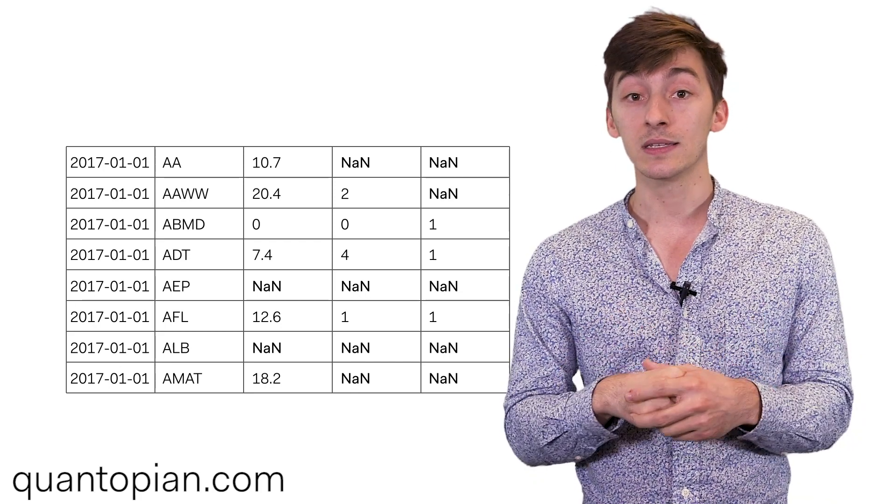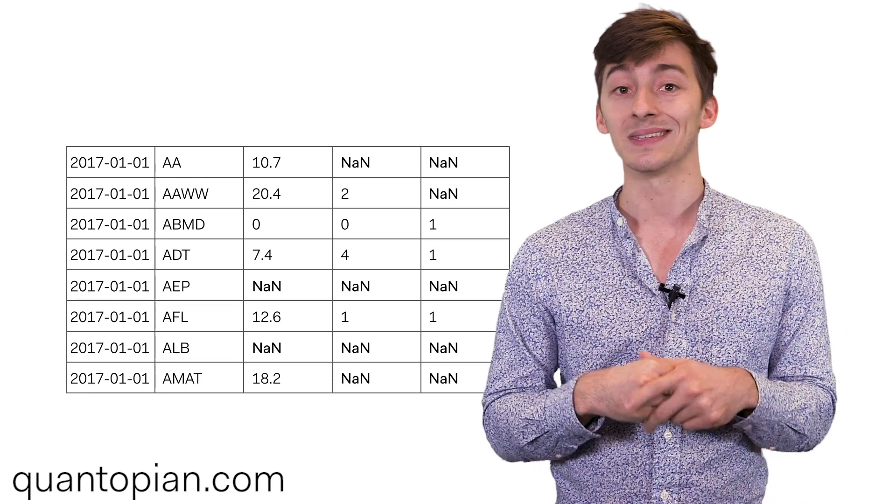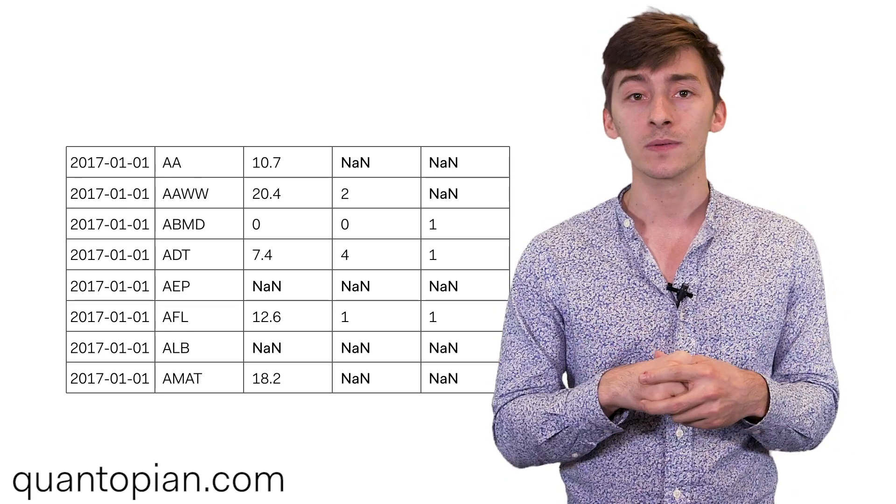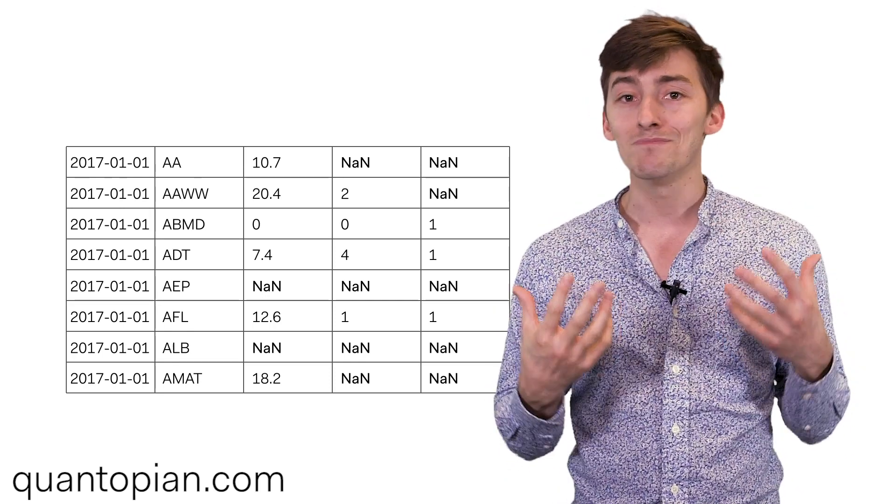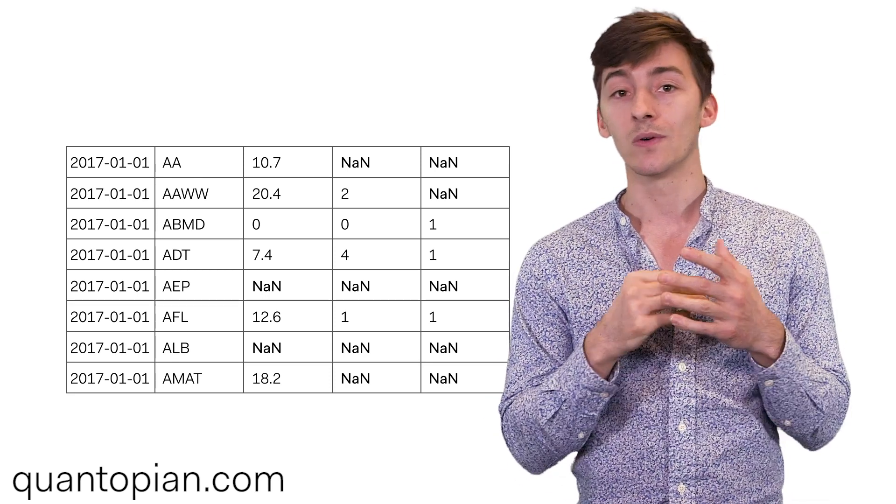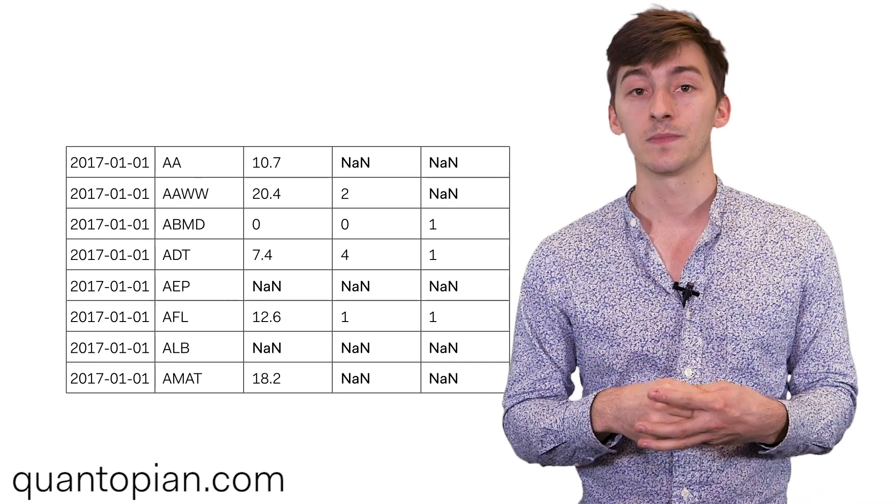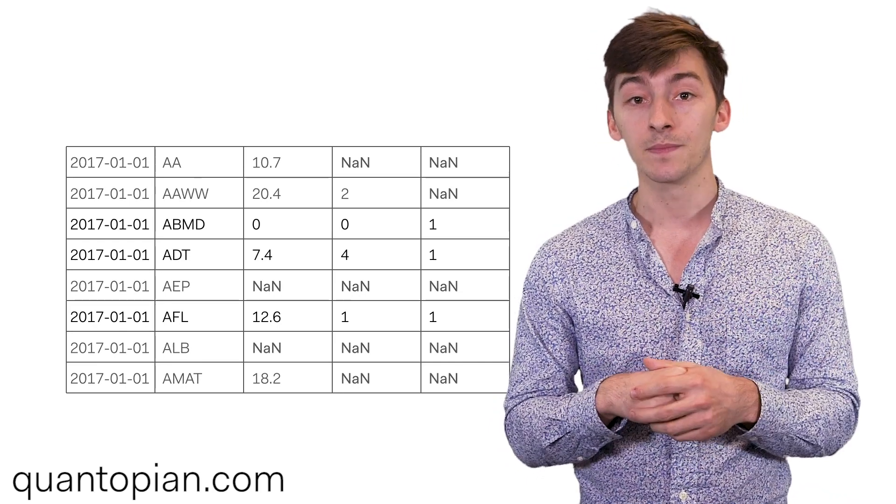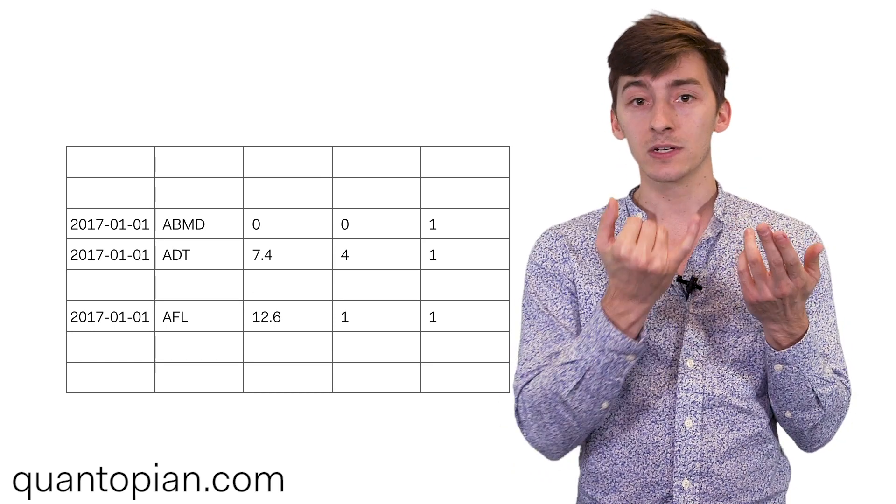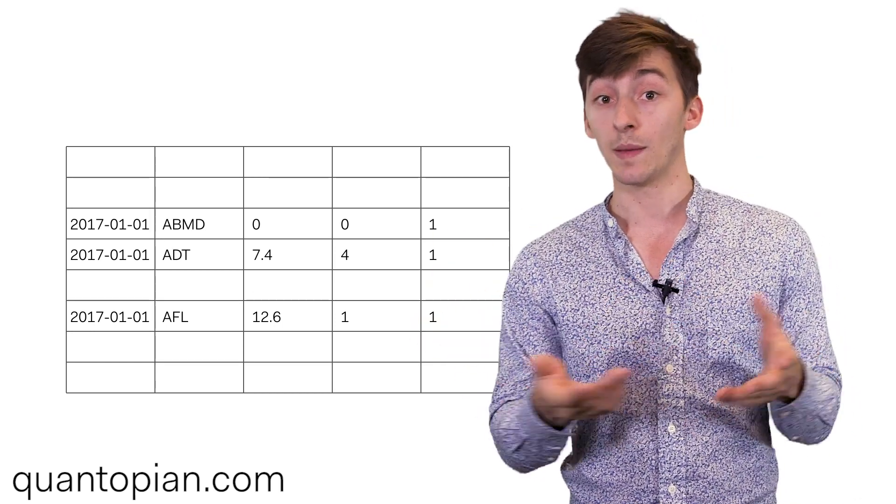When you actually have your data in a state where you could feed it into a model, the next thing to look out for is NANs or missing values. This is just either missing data or data that doesn't exist. It's something that you're going to run into wherever you look, and there are two main ways that we go about handling this. The first is by dropping it. So if you have any observation with some number of features, if there are any features that are NAN, you drop that observation.